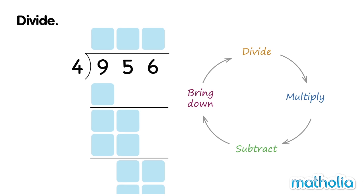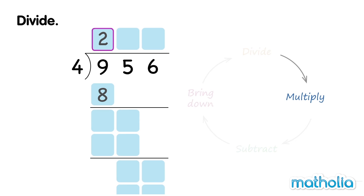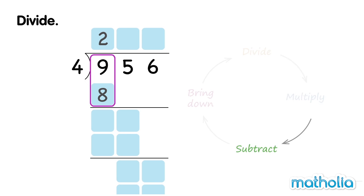Let's find 956 divide 4. Start by dividing the hundreds. 9 hundreds divide 4 leaves a quotient of 2. Write the 2 in the hundreds column at the top. Multiply. 2 hundreds times 4 equals 8 hundreds. Subtract. 9 hundreds minus 8 hundreds equals 100.